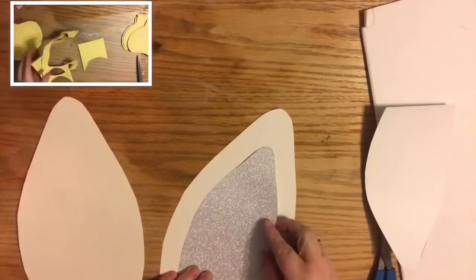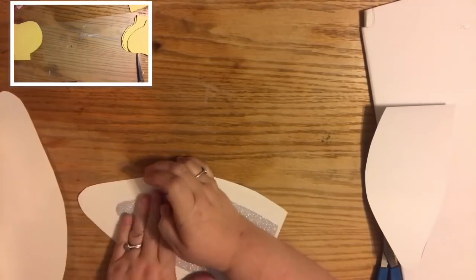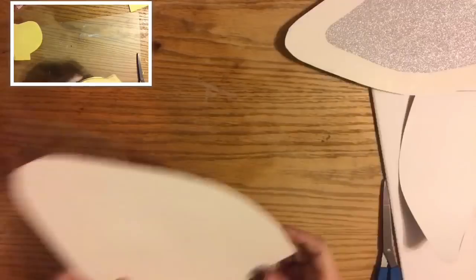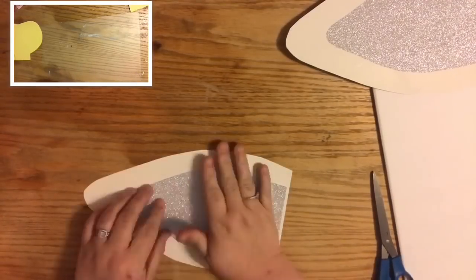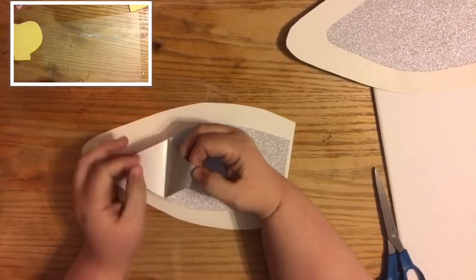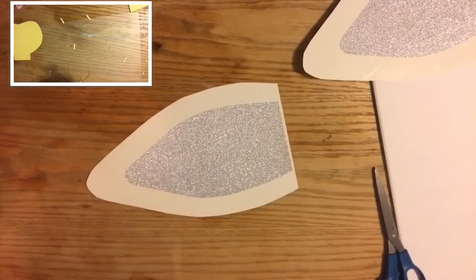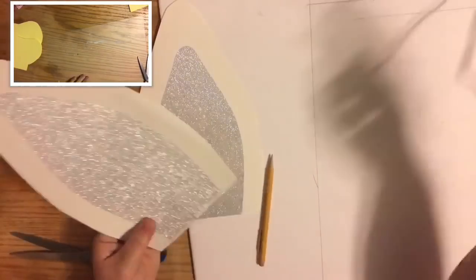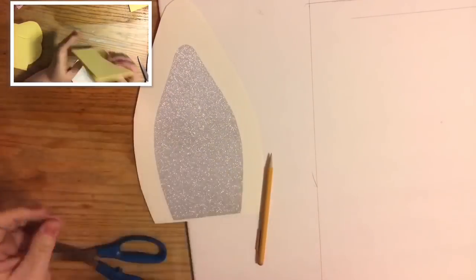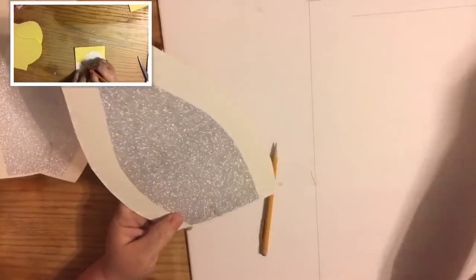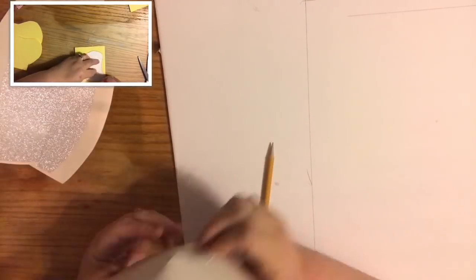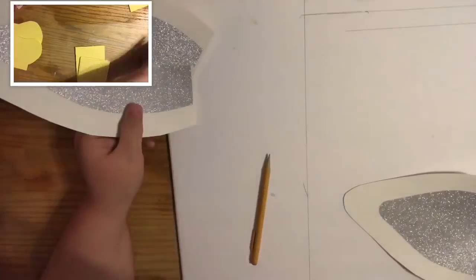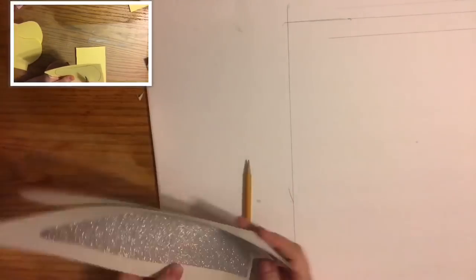You can also use metallic gift bags or metallic wrapping paper. This is just to make a sparkly inner ear, and this one happens to be a sticker. We're going to do the same type of trick we did with the petals. We're going to cut a slit up the middle and overlap the two ends and glue it so we can make a three-dimensional type ear. We're going to repeat that to both, and then they'll both tuck behind the corners.